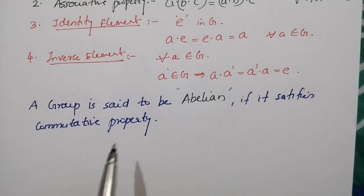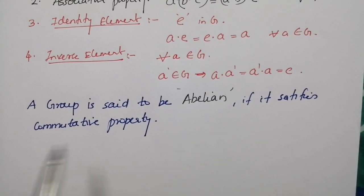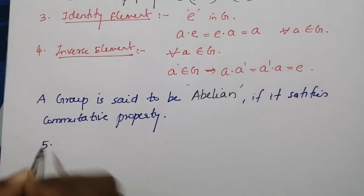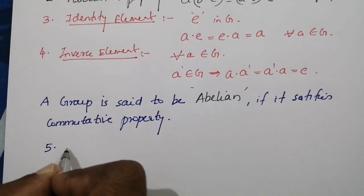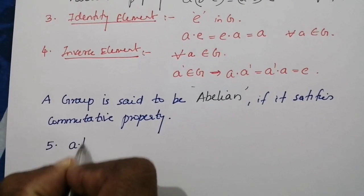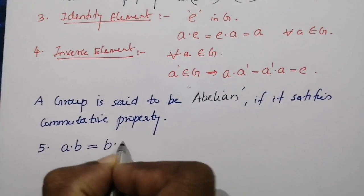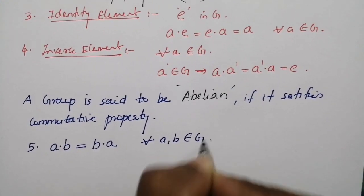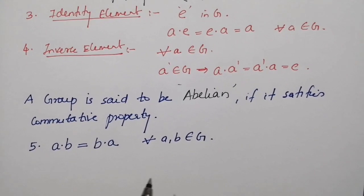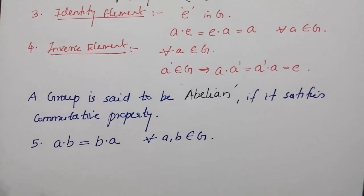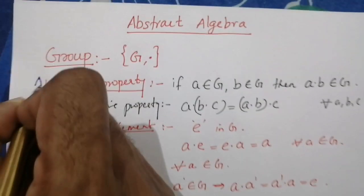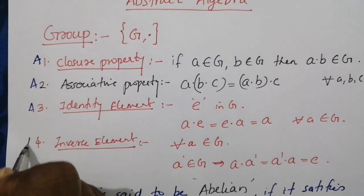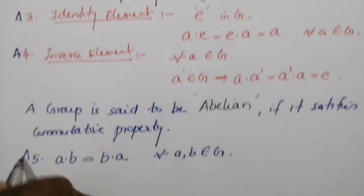A group is said to be abelian if it satisfies the commutative property — designated as property A5. That is, a·b = b·a for all a, b belonging to G. For convenience, the five group axioms are labeled A1 (closure), A2 (associativity), A3 (identity element), A4 (inverse element), and A5 (commutative property).